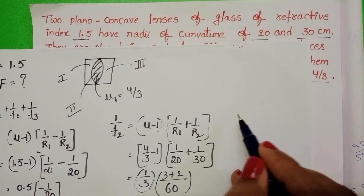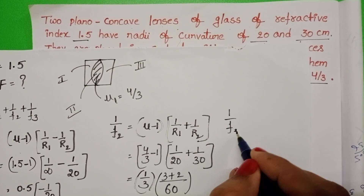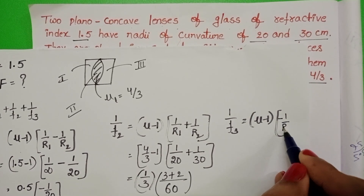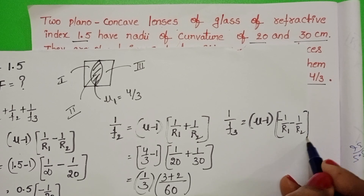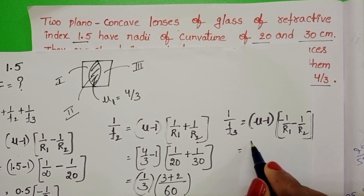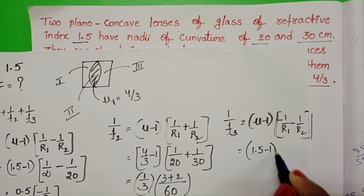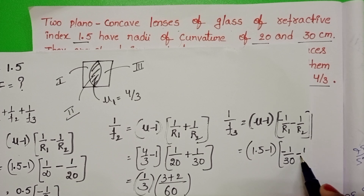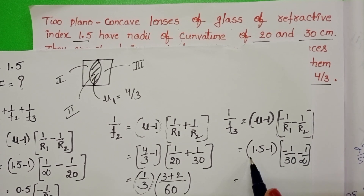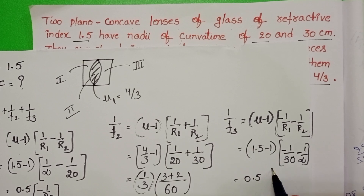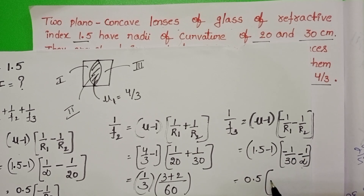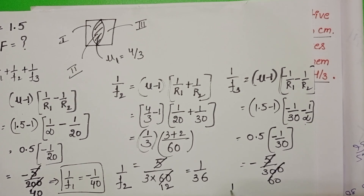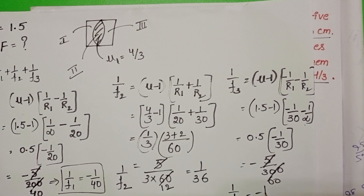For the third lens — the second plano-concave lens — 1/F3 = (μ - 1)(-1/R1 - 1/R2). The refractive index is 1.5, so μ - 1 = 0.5. The curved surface has radius 30 cm and the second surface is plane (R = infinity, so 1/R = 0). This gives -5/300, so 1/F3 = -1/60.